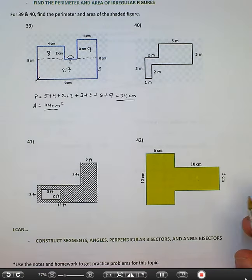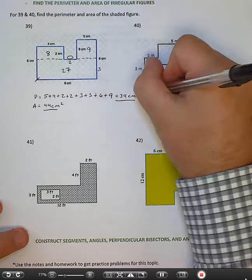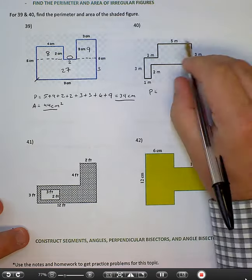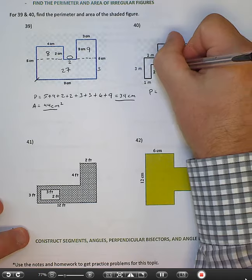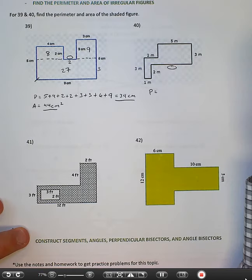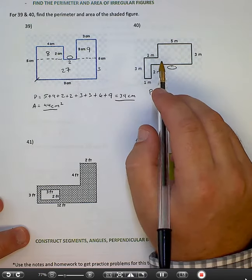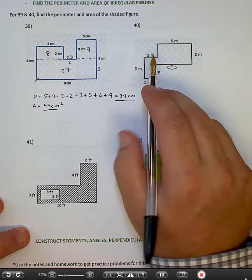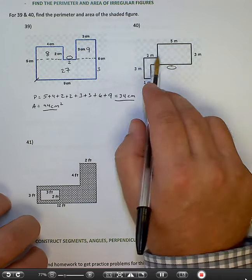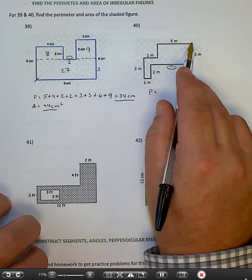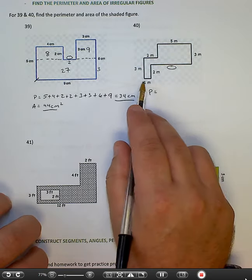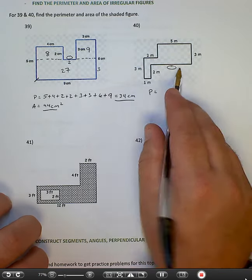Number 40, perimeter, missing this side down here. So this one's a little tricky because I don't have a side that's the whole horizontal distance. But I do know that from the far left to the far right is 2 plus 5, so it's 7 total. So this is 1, so what's left? This has got to be 6.